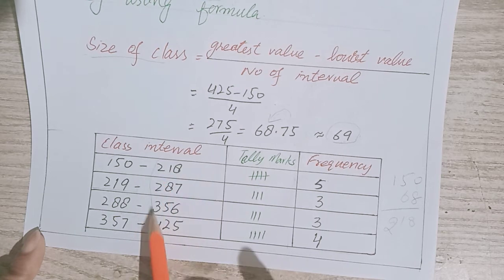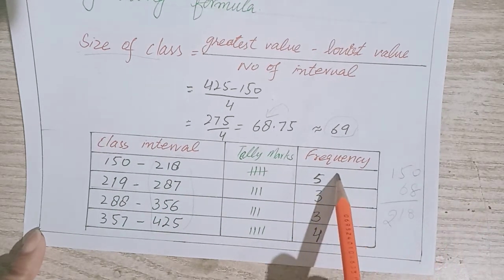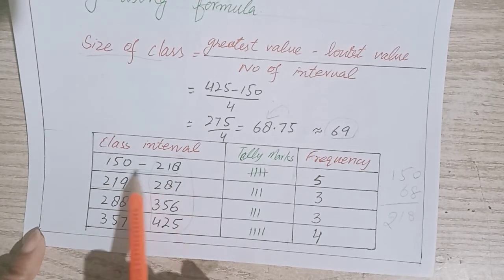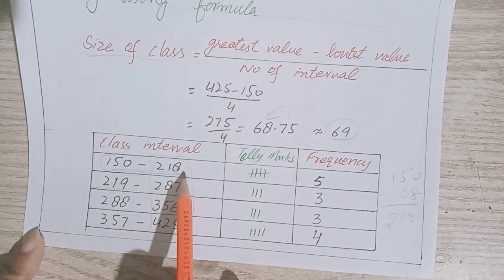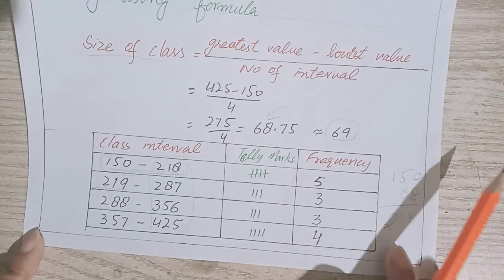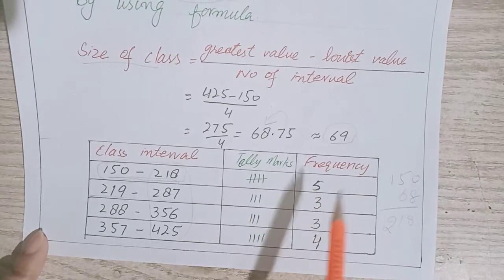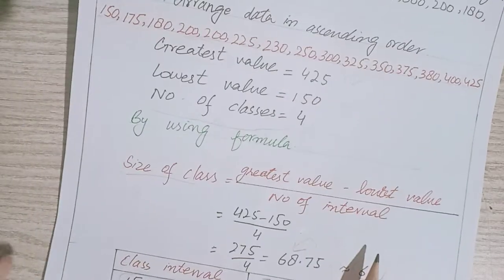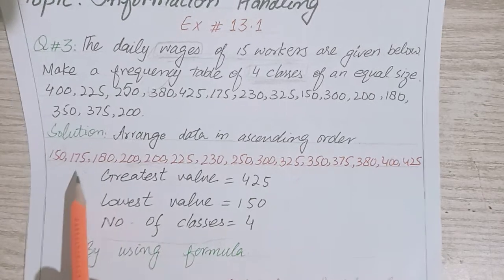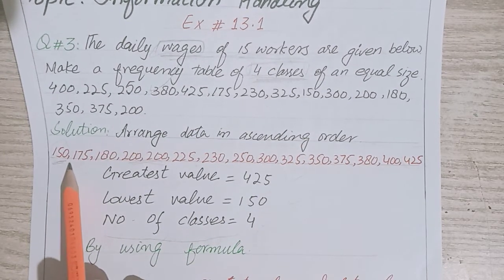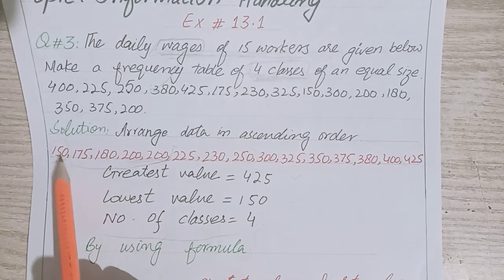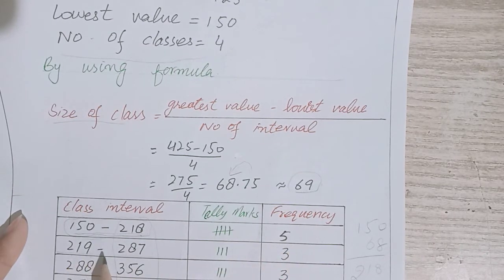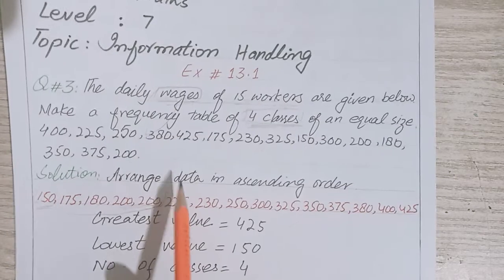Now we need to find the frequency - how many times each value appears. Let's start. We have the range 150 to 219. Checking the data: 150, 180, 200, 210 - these values fall in this range, so we have 5 numbers. Next is 219 to 287, and we check from here.